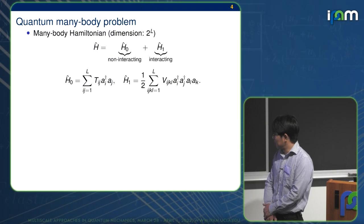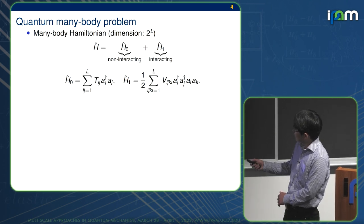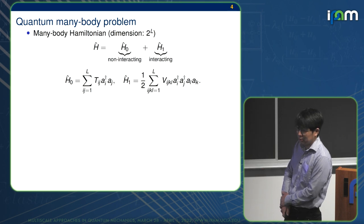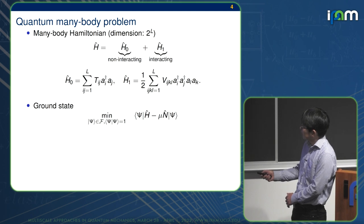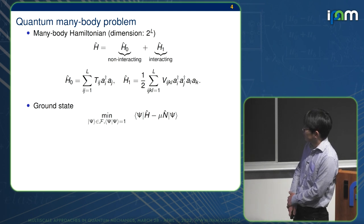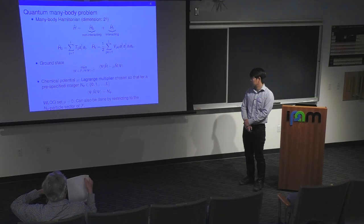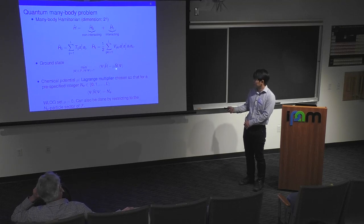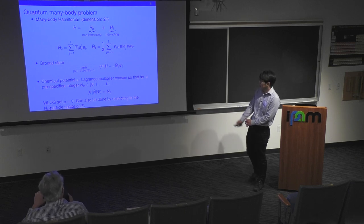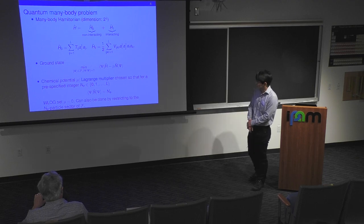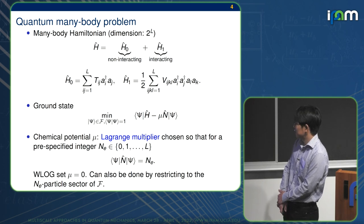Setup of the quantum impurity problem. The Hamiltonian contains a non-interacting, aka quadratic term, and an interacting term, aka a quartic term. The ground state is given by the minimization of the Hamiltonian minus mu times n, where n is the number operator, and you minimize over the entire Fock space. If you already know the number of electrons a priori, the number of electrons should be between 0 and L, where L is the number of spin orbitals.